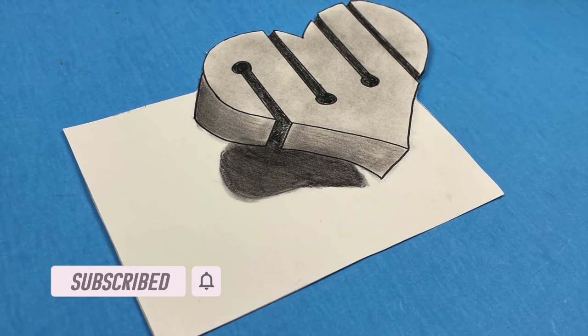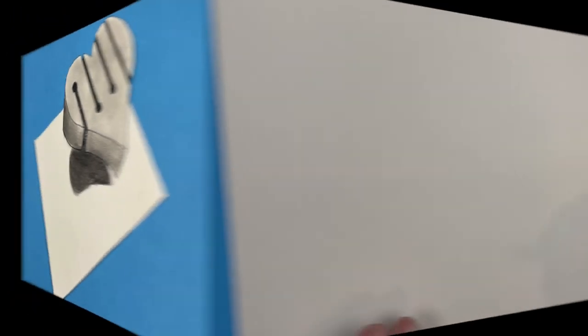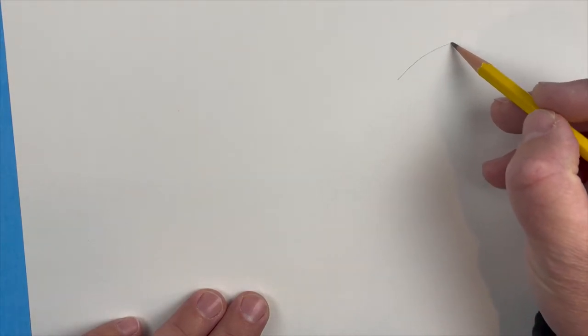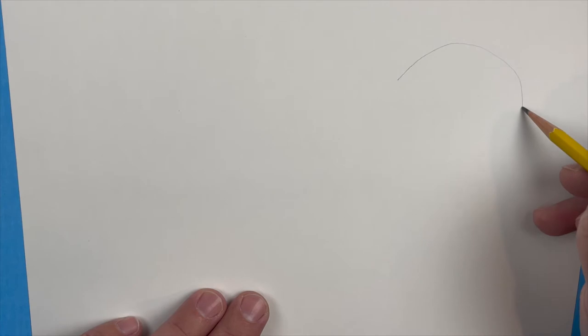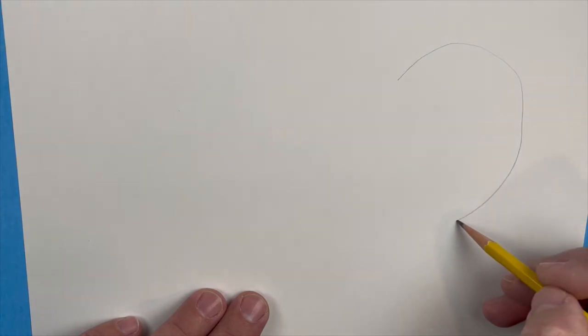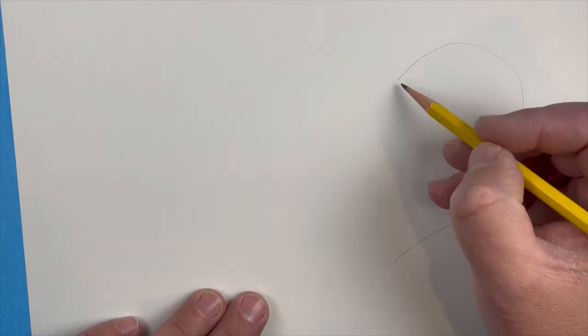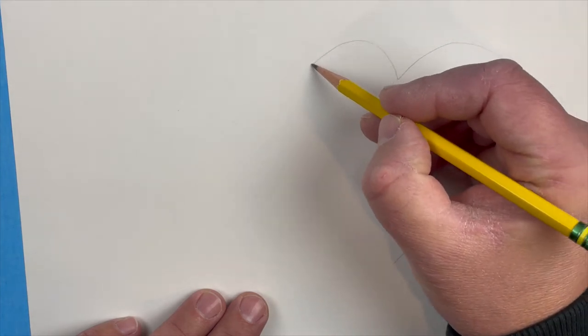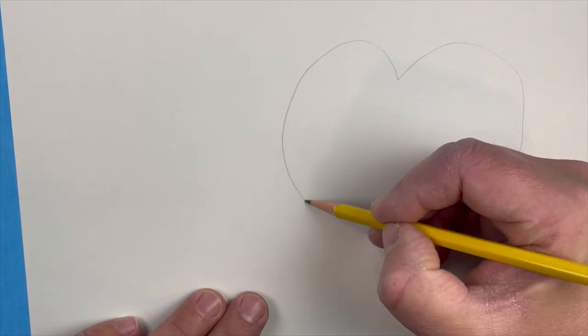Turn on your notifications so you won't miss out on any future videos. Alright guys, this one we're starting with a regular piece of paper and a pencil. What you're going to do first is draw a basic heart shape. It doesn't really matter what kind, keep it a nice big puffy heart.